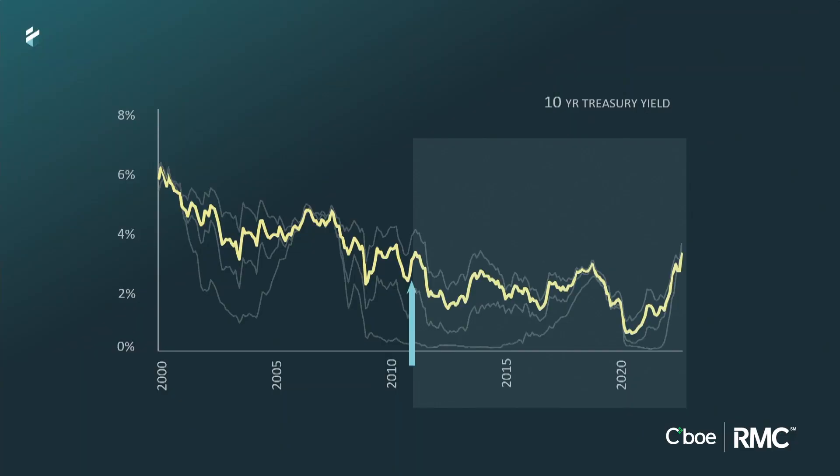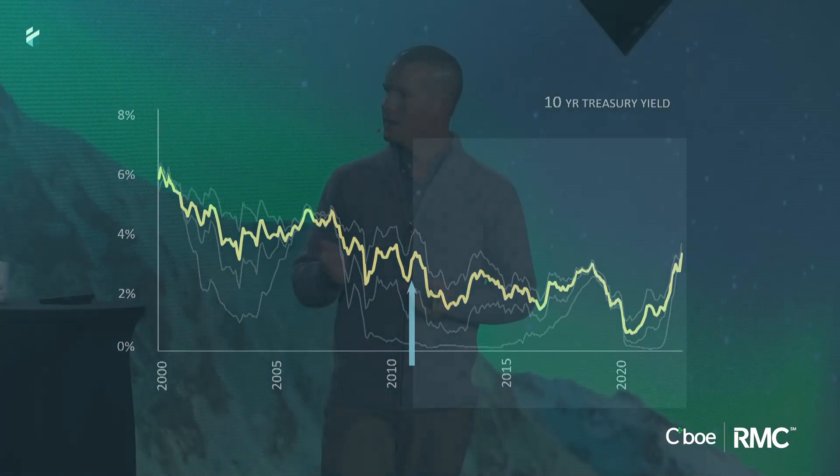What the insurance companies were essentially doing is replicating structured notes using their balance sheet instead of doing it through the banks.